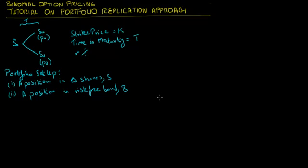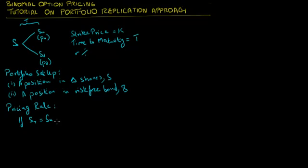Since this portfolio must replicate the payoff of the option whether the stock price goes up or down, our pricing rule is as follows. If the terminal value of the stock price ST equals SU — in other words, if the up state occurs — then the value of the stock position, which is delta times SU, plus the value of the bond position at that time, which is B compounded at the risk-free rate over the time period T, must equal the payoff of the option in the up state.